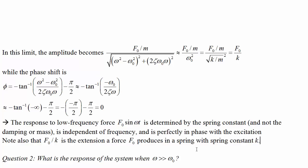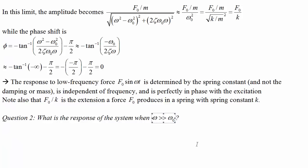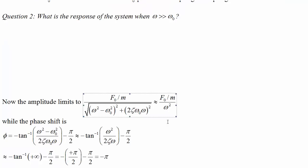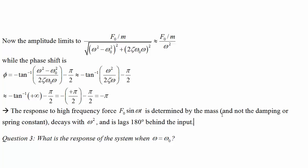If we're at relatively low frequency, then the harmonic behavior of the spring doesn't matter because we're moving slow enough that the time dependence goes away and the spring just behaves like we're used to seeing springs behave. What is the response when ω is much bigger than ω₀? At extremely high frequency, the amplitude limits to F₀/m divided by ω². The phase shift turns out to be -π. The response at high frequency is mass determined, not determined by the damping or the spring constant, and decays with ω², lags 180 degrees behind the input.